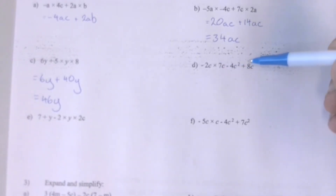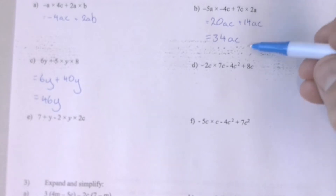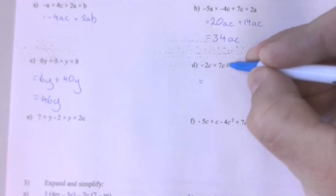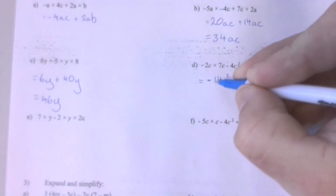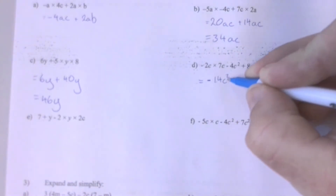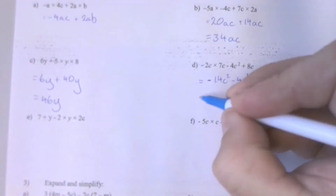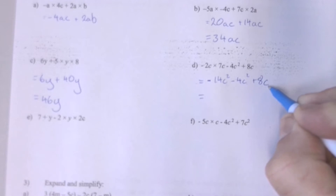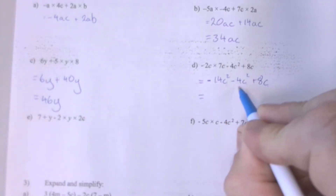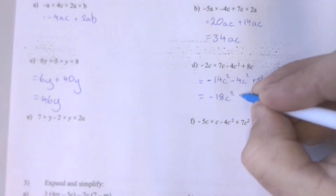Question 1D has got multiplication, subtraction, and addition in it, and I'm also being careful because I can see I'm going to be working with negative numbers. So I'll start with my multiplication: minus 2C times 7C makes minus 14C squared. Remember it's minus 2 times 7 making minus 14, and then C times C — C squared means C times C. Then minus 4C squared plus 8C. Now I'm going to collect my like terms. I can collect the groups of C squared, but C is different — those mean the number multiplied by itself, whereas these are just the number sitting there. So I've got minus 14 taking another 4 C squareds away, leaving me with minus 18C squared and 8C.